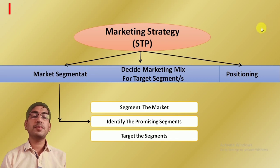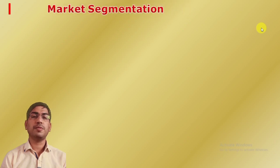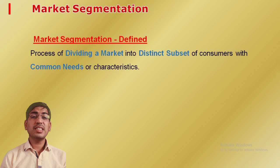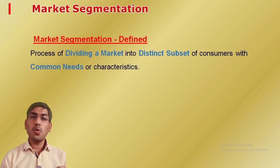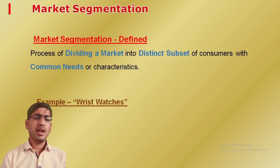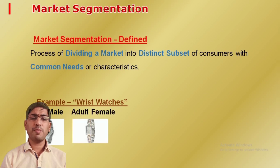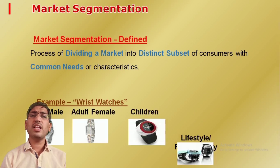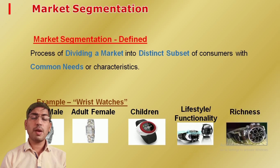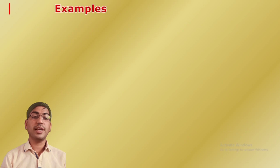Market segmentation is a process of dividing a market into subsets of consumers with common needs, characteristics, or preferences. According to people's needs we separate them — that is market segmentation. For example, if we are talking about watches, there are different types — maybe for male, female, children, again according to lifestyle, and finally according to income level. There are different bases for market segmentation.